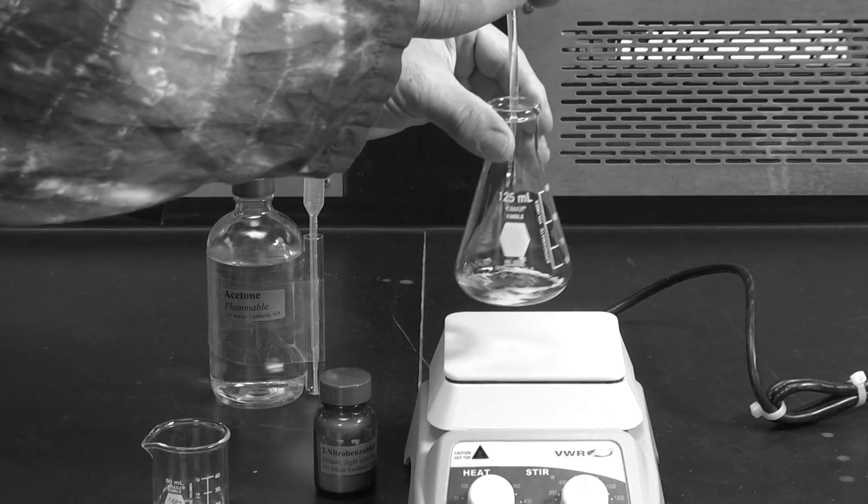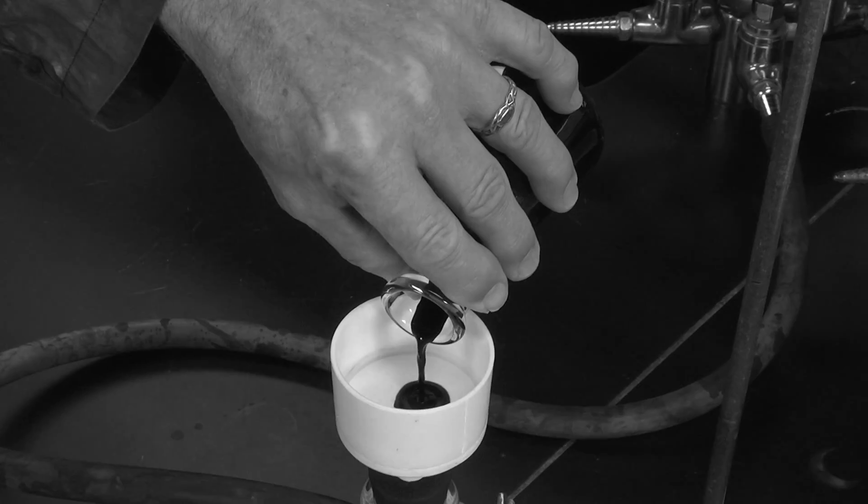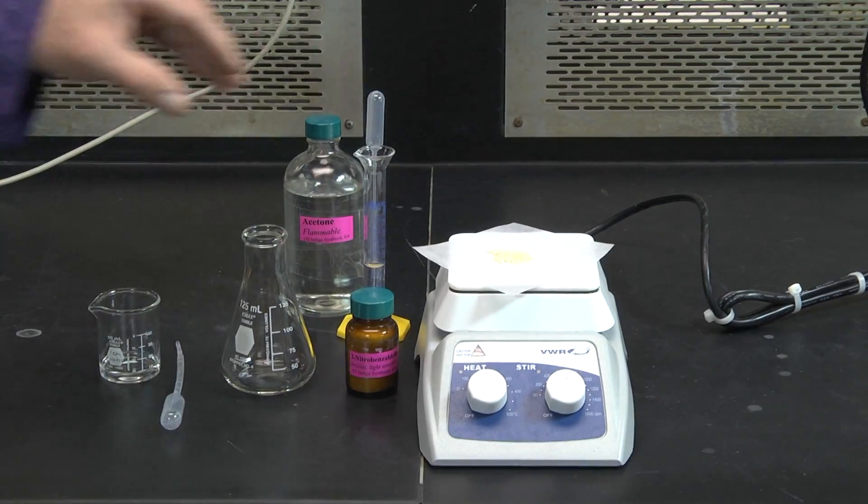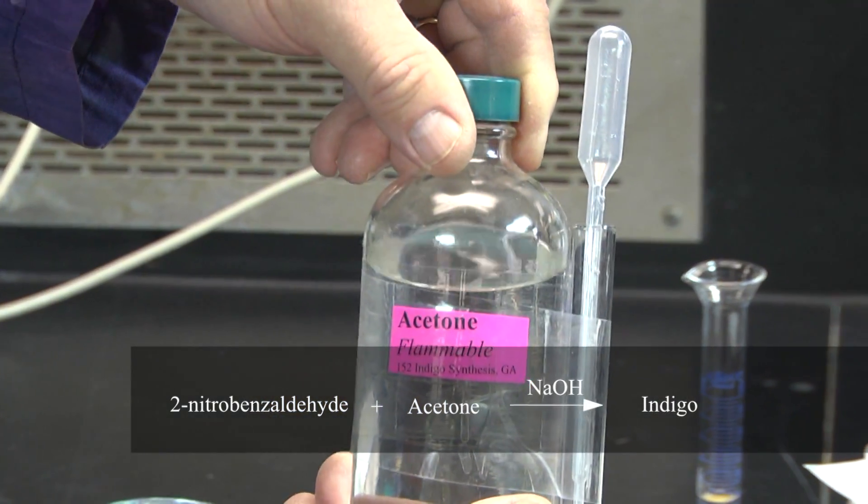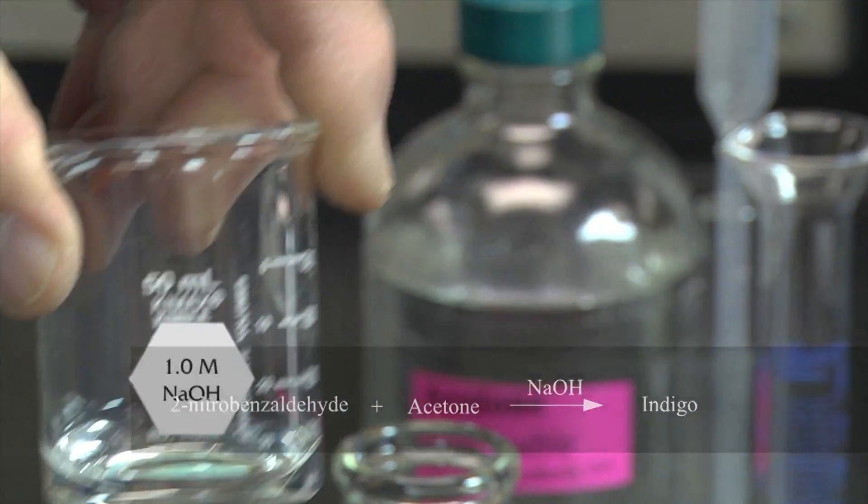This short video will show you how to synthesize the organic dye, indigo. The reaction is between 2-nitrobenzaldehyde and acetone and occurs best in the presence of a strong base.